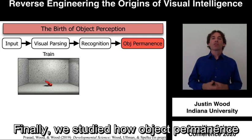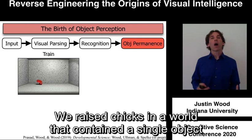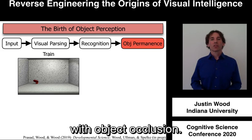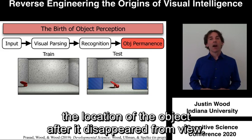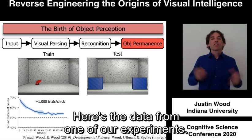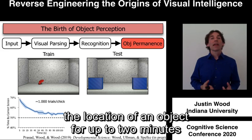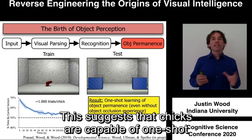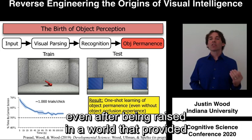Finally, we've studied how object permanence develops in chicks. We raised chicks in a world containing a single object that moves smoothly around the chamber. This object never disappeared behind another object, so this environment provided no experience with object occlusion. We then tested whether the chicks could remember the location of the object after it disappeared from view, measuring whether the chicks spent more time by the correct screen versus the incorrect screen. Newborn chicks are able to remember the location of an object for up to two minutes, with particularly strong performance during the first one minute after the object disappeared. This suggests that chicks are capable of one-shot learning of object permanence, even after being raised in a world that provided no experience with object occlusion.